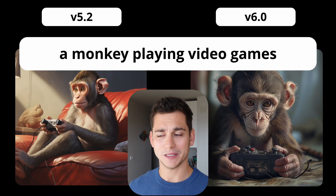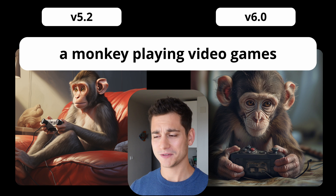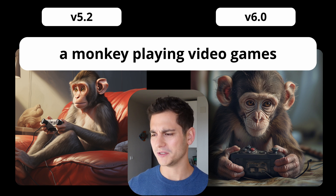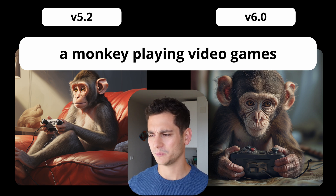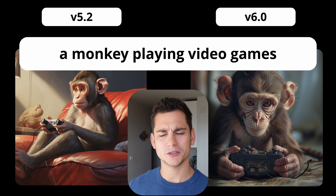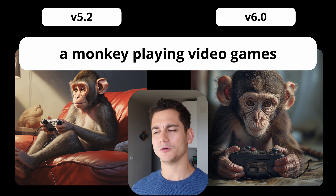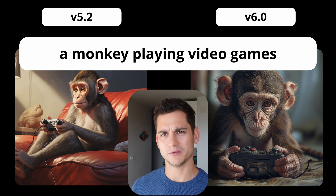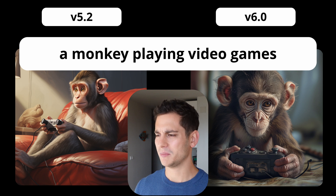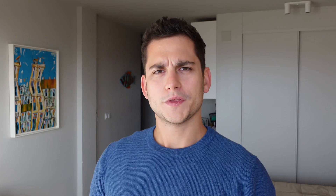Then I wanted to move into more abstract pictures — I wanted to see if both versions could generate a monkey playing video games. To my surprise, they both did a great job. The monkey is holding some sort of PlayStation controller, sitting on a couch or on the floor, playing video games. Midjourney 6.0 might be a bit of a better graphic, but honestly, two great pictures.